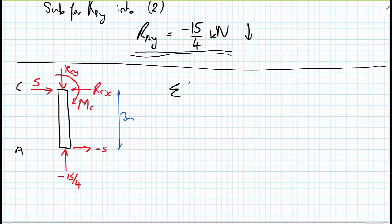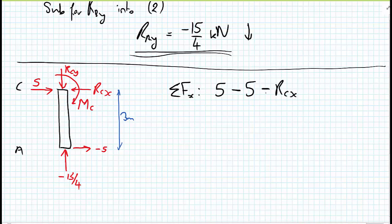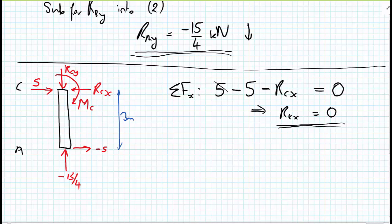Writing the equations of equilibrium for column AC — sum of forces in the X direction: the external force of 5 pointing right, plus RAX presumed right with magnitude −5, minus RCX presumed left, equals zero. We can see 5 minus 5 immediately, so RCX = 0. This means there is no horizontal force coming from the beam acting on the column.